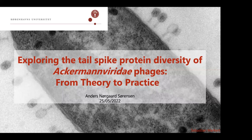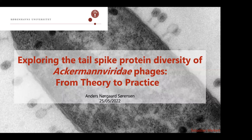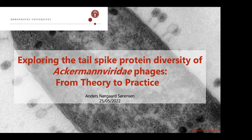In the second study, the tail spike diversity of Ackermannviridae phages was investigated. He recently isolated Agtrevirus phage AV11 and used it as an example where the tail spike protein receptor recognition was determined. The receptor binding domains of the tail spike proteins showed similarity towards prophages, therefore suggesting an evolutionary link between lytic and lysogenic phages. The knowledge about diversity of tail spike proteins was also exploited — the study showed that entire tail spike protein genes can be exchanged between phages in the family, with receptor recognition evaluated. Anders gave an oral presentation of this study at the Viruses of Microbes 2022 conference.